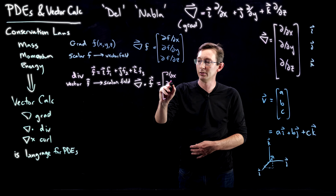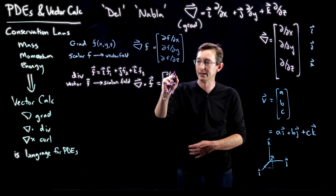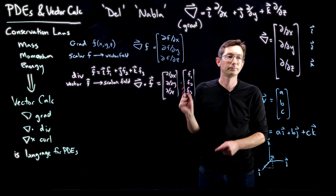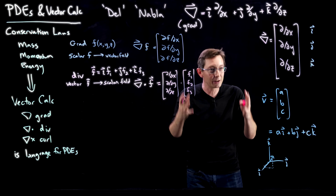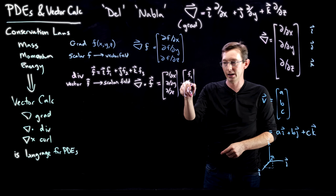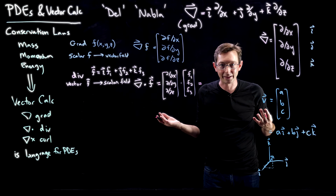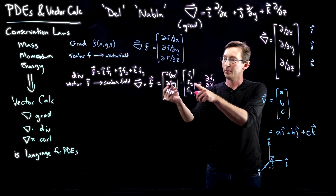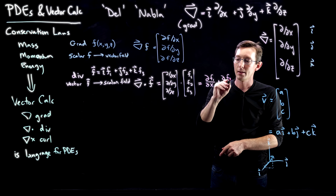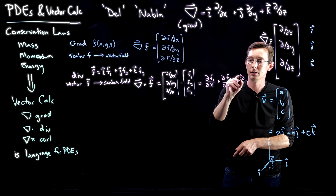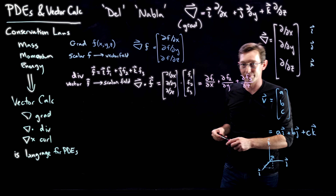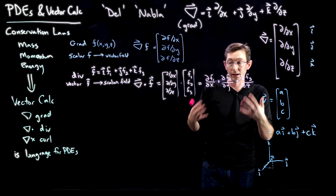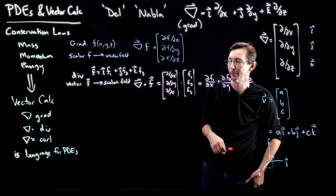Del dot F is taking the operator (∂/∂x, ∂/∂y, ∂/∂z) and dotting it with (f1, f2, f3). We know how to take the dot product — it's just ∂f1/∂x plus ∂f2/∂y plus ∂f3/∂z. Because we've summed this up, it's just a scalar function of x, y, and z. So it took my vector field and returned a scalar field.